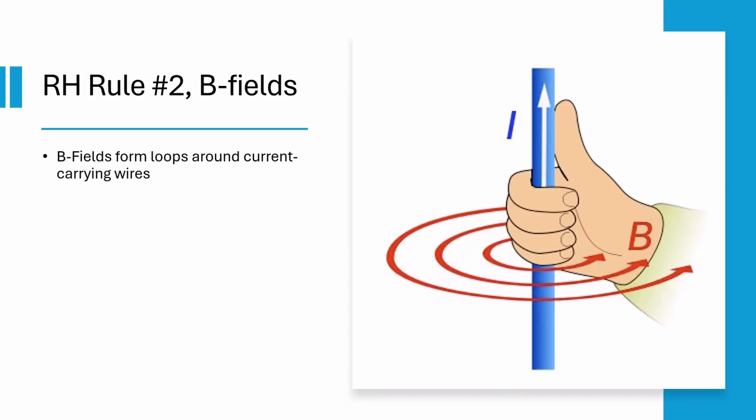So far B-field has just been this mysterious thing we need in order to calculate the force, but now let's talk about what it actually is. B-fields form loops around wires. The direction of the loop is found using right hand rule number two. Point your thumb towards current and your fingers curl counterclockwise or clockwise showing you the direction of the B-field loop.